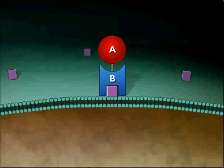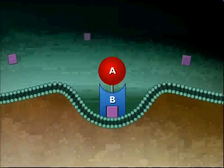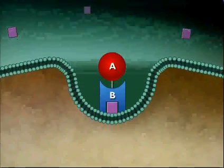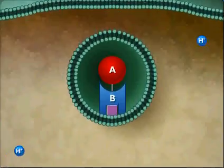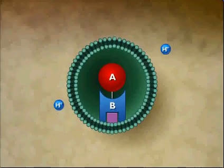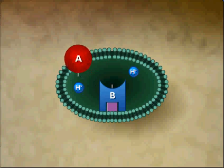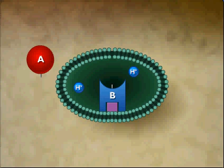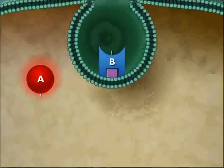There are several mechanisms by which AB toxins enter the cell. One mechanism involves the uptake of the toxin after binding by endocytosis. After endocytosis, the contents of the vacuole become acidic, causing the A and B portions to separate. The A portion enters the cytoplasm of the cell and exerts its toxic effect, while the B portion is removed from the cell by exocytosis.